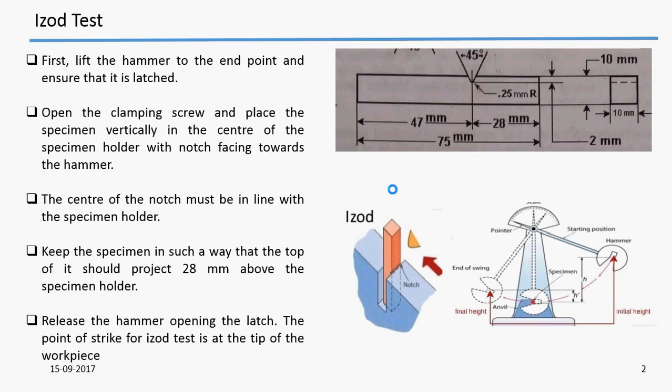You can see from the figure that a notch is made 28 mm from the right hand end, and this part is kept vertically when we fix the sample in the sample holder.